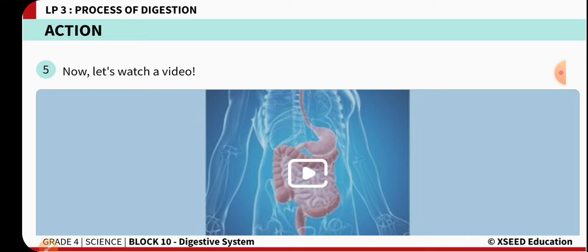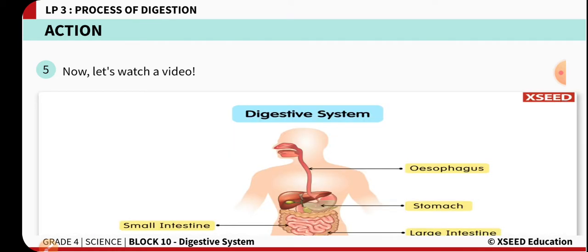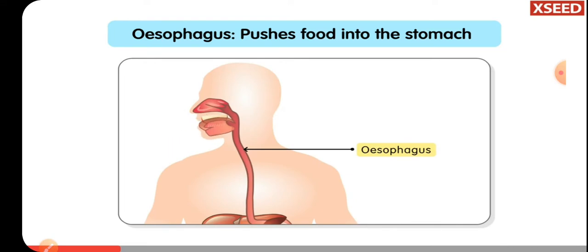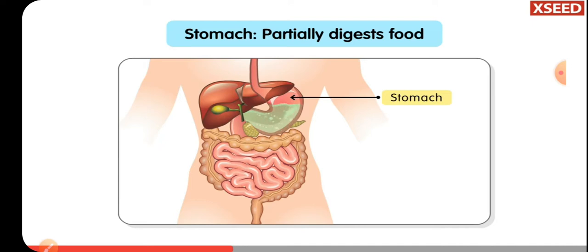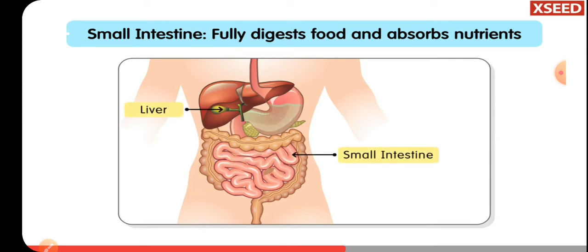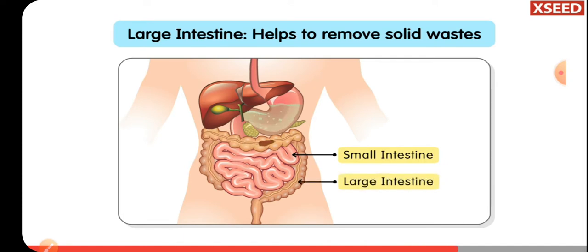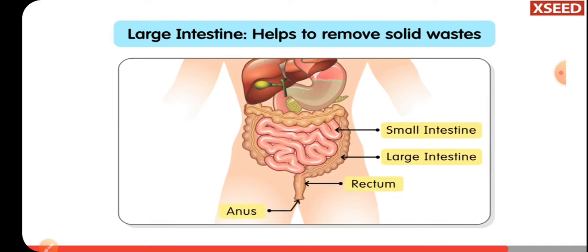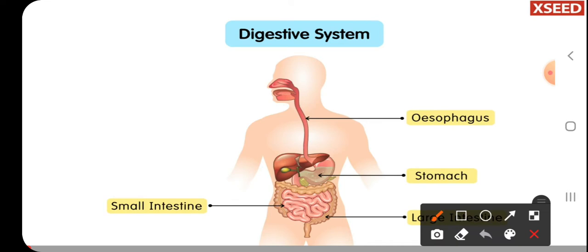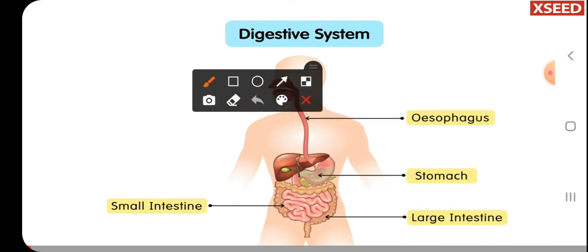Let us have a look at a small video. Digestive organs have different functions. The esophagus pushes food into the stomach, which releases digestive juices that partially digest food. Food then goes to the small intestine, where digestive juices from the liver and pancreas help digest food. Undigested food enters the large intestine and is sent out through the anus.